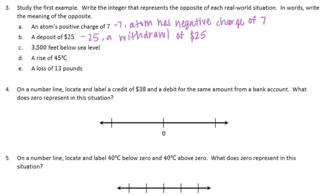3,500 feet below sea level: the opposite of that would be 3,500 feet above sea level, which would be positive. Next, a rise of 45 degrees Celsius.